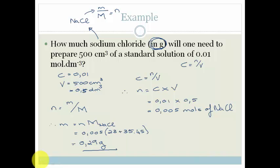So there we go. If we take 0.29 grams of sodium chloride and we dissolve it in 500 cubic centimeters of water, we will end up with a standard solution of 0.01 moles per decimeter cubed. And that grade 11 is how easy it is to work out our concentration.